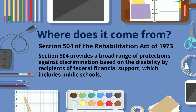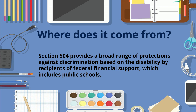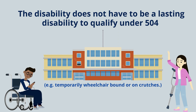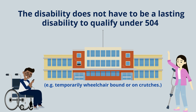Where does it come from? Section 504 of the Rehabilitation Act of 1973. Section 504 provides a broad range of protections against discrimination based on disability for recipients of federal financial support, which includes public schools. The disability does not have to be a lasting disability to qualify under 504 — examples being temporarily wheelchair-bound or on crutches.